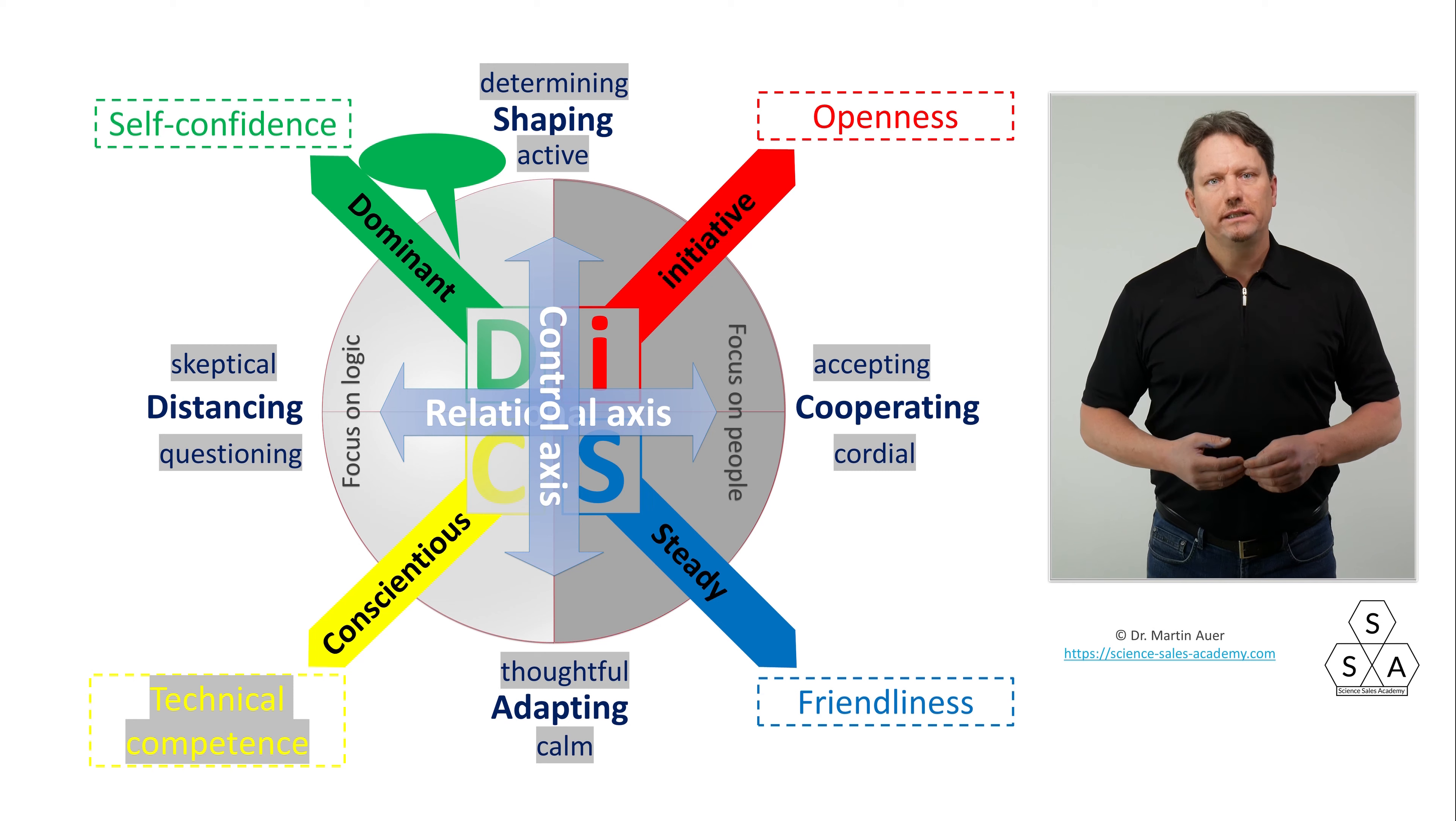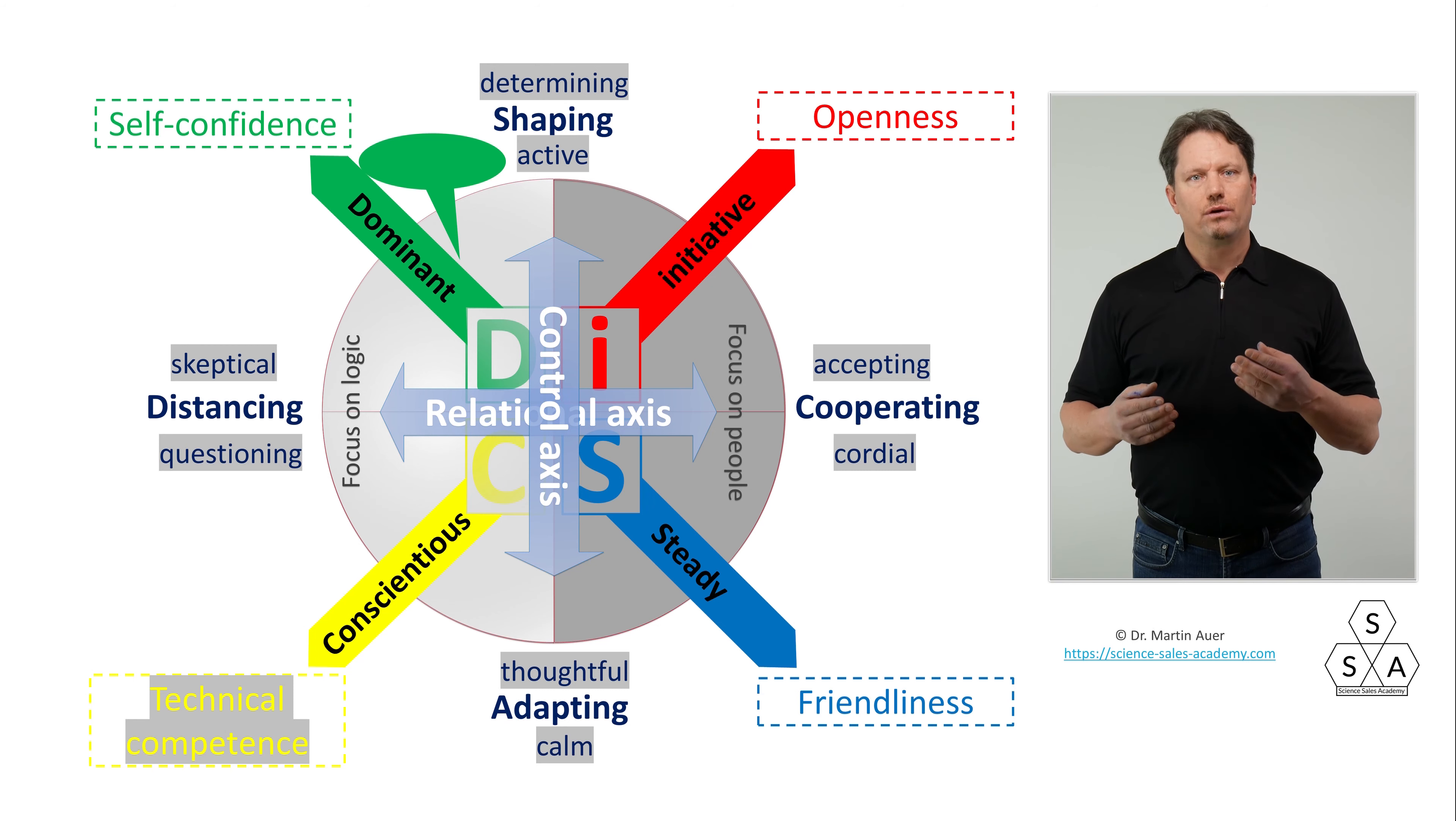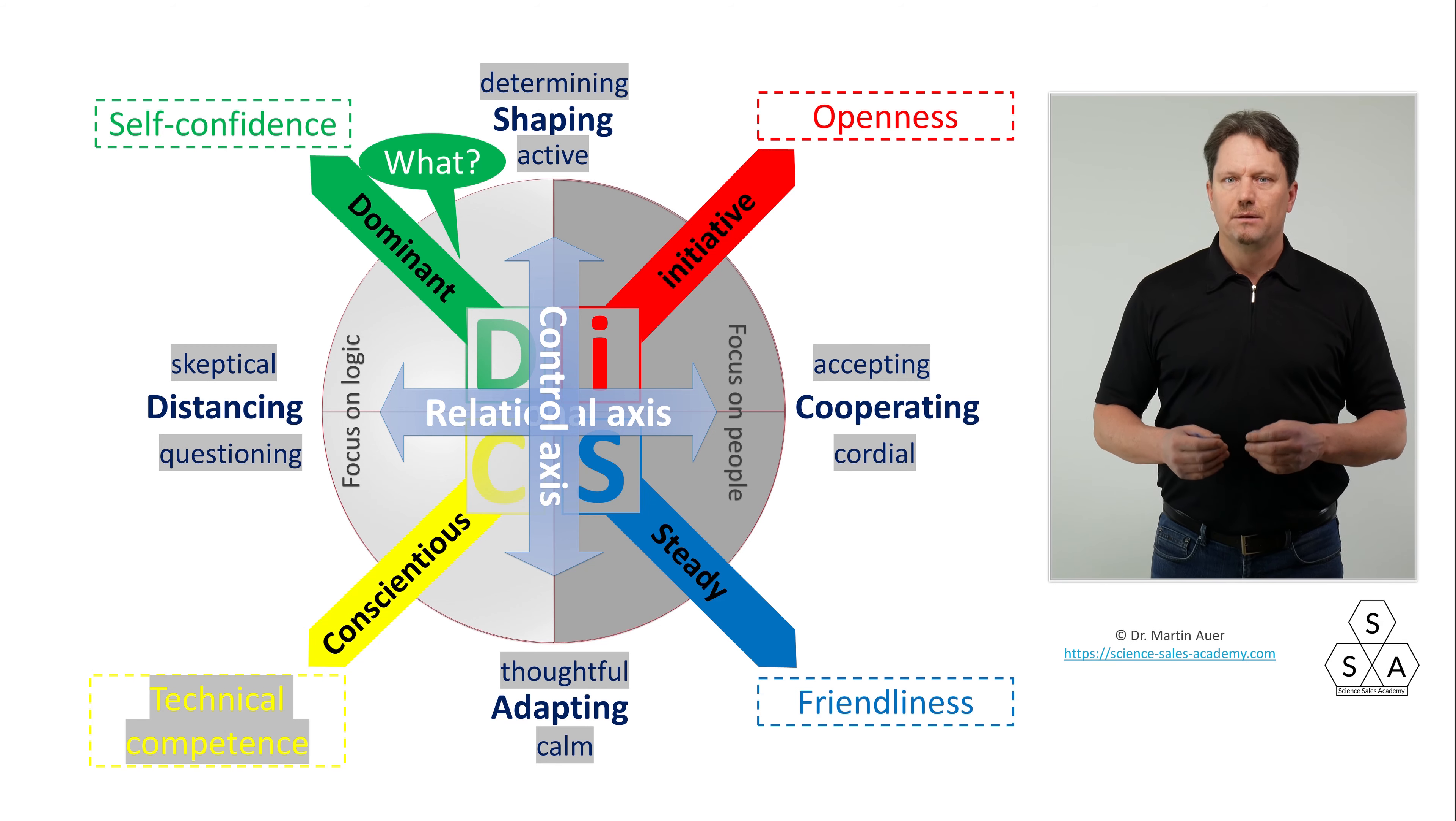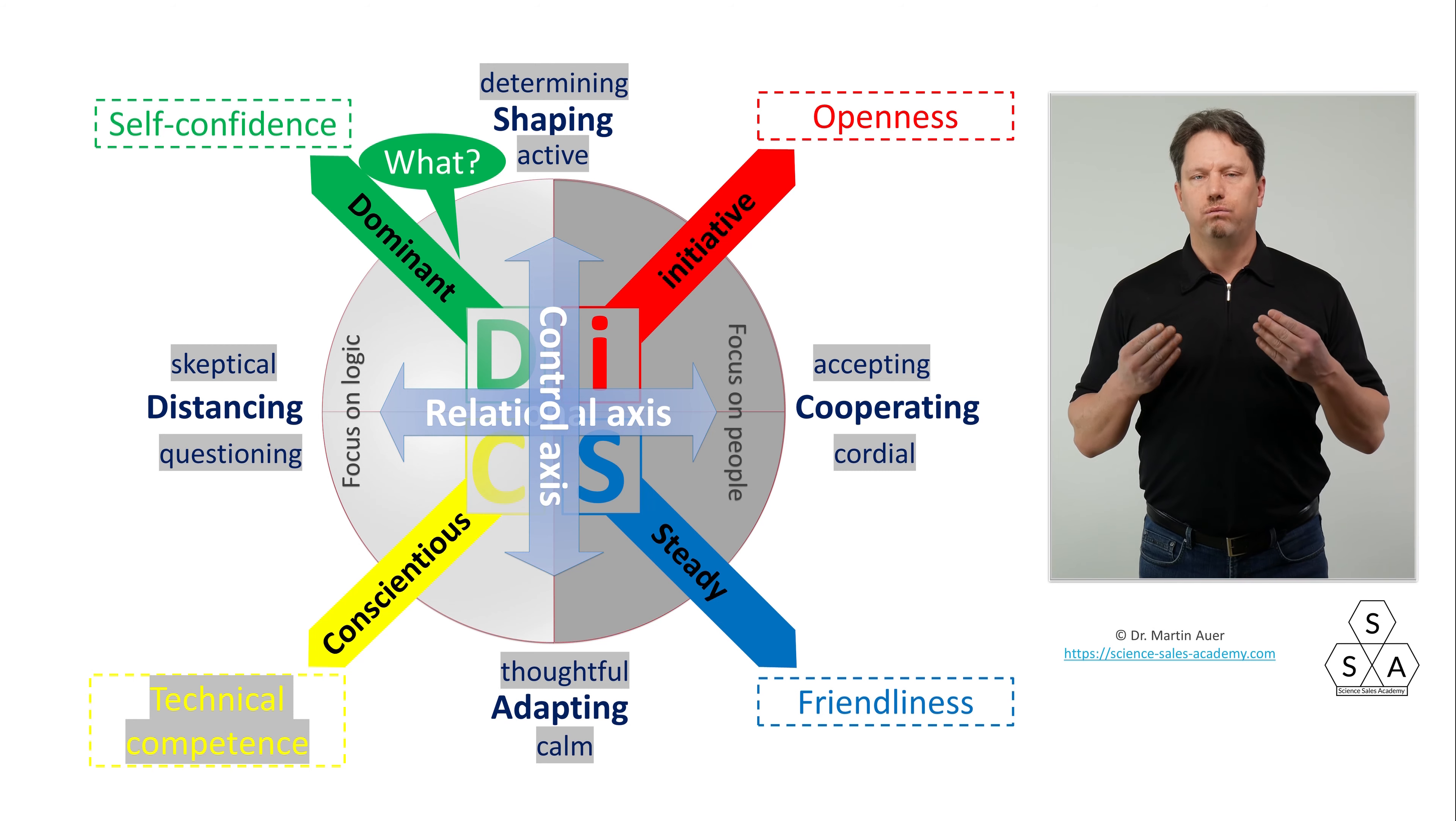When we look at a D-type, at a dominant type, it's pretty clear. For them, the first and most important question is: what is in it for me? I mean, what is in it for me in terms of progress, efficiency, profit, goal achievement, prestige, reputation. So, the question here is: what? At the other end, with the S-types, the question is more like: how? How safe it is? How well will it work out? How well will the new solution fit into my existing workflow? How smooth will everything be?